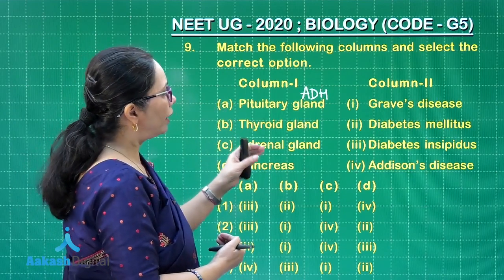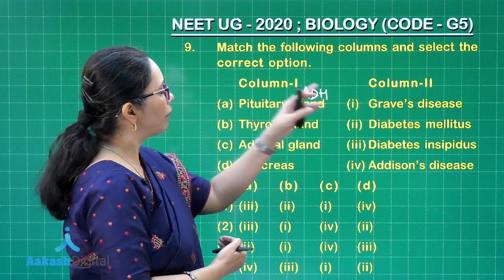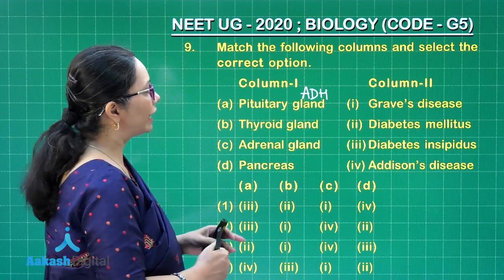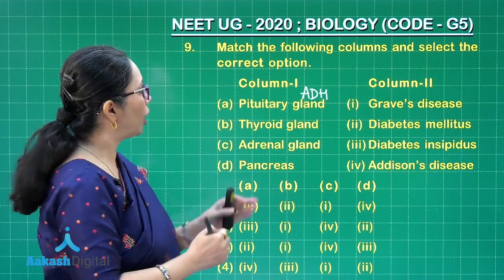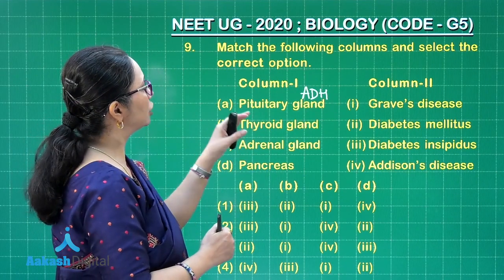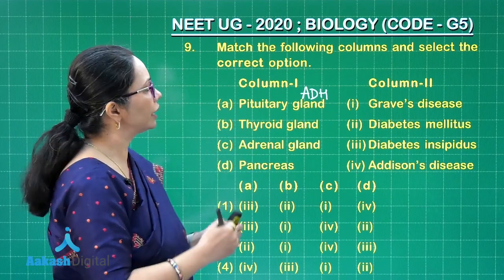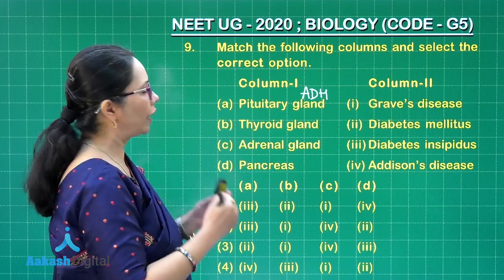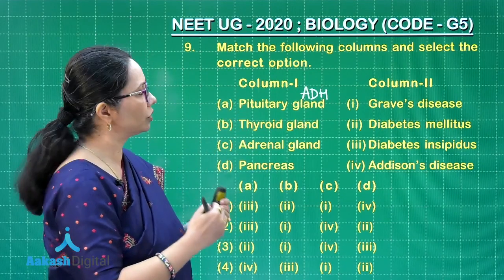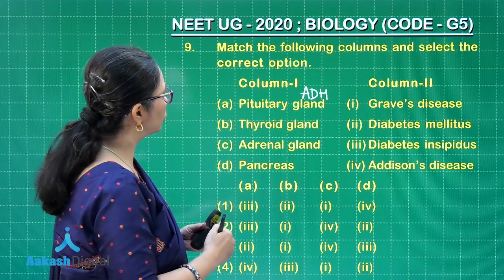Thyroid gland can be matched with Graves' disease, because this is due to excess secretion of thyroxine and it is an autoimmune disorder.